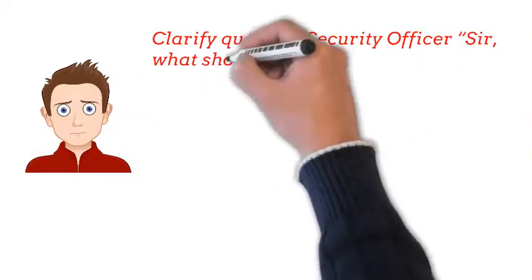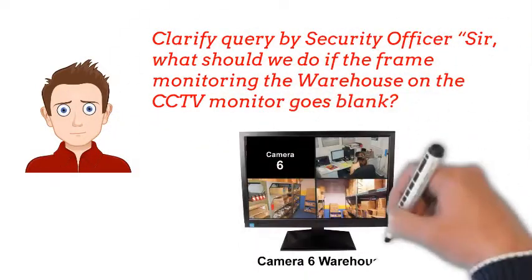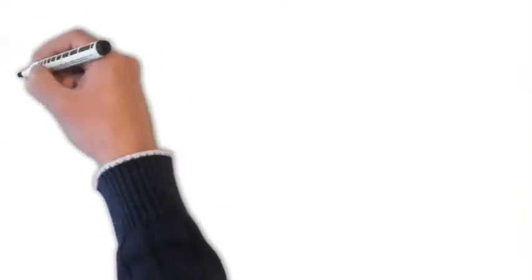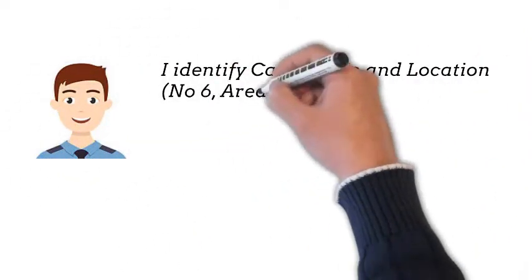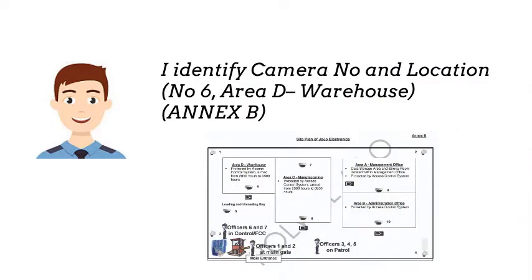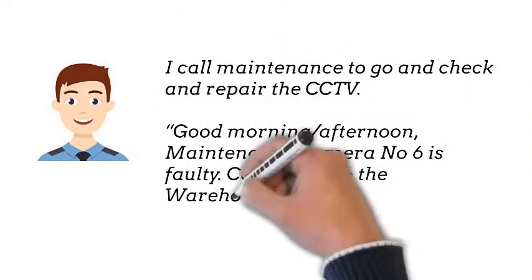Clarify query by security officer: Sir, what should we do if the frame monitoring the warehouse on the CCTV monitor goes blank? I identify camera number and location — number 6, Area D warehouse.